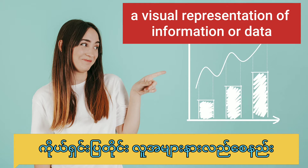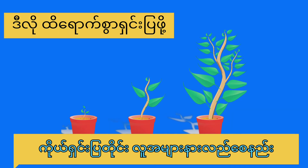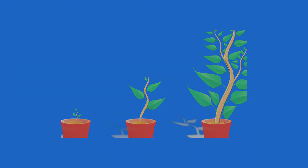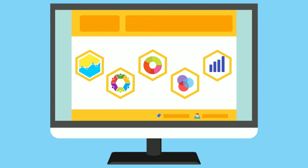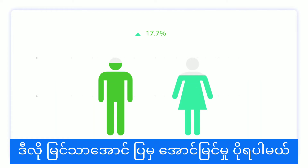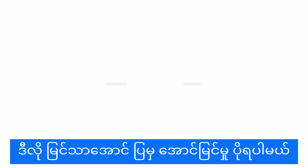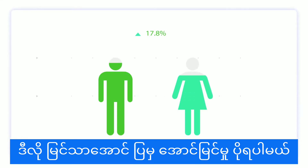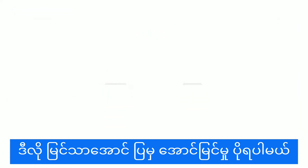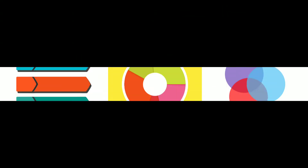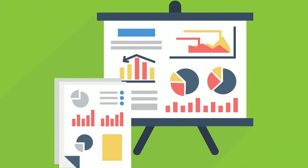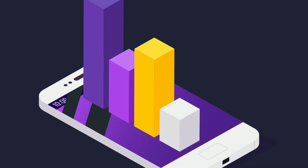If you want to explain the information, you can see it on the screen. The information is available on the screen. In the infographic, you can see the information on the screen. So, we have a lot of information about this.